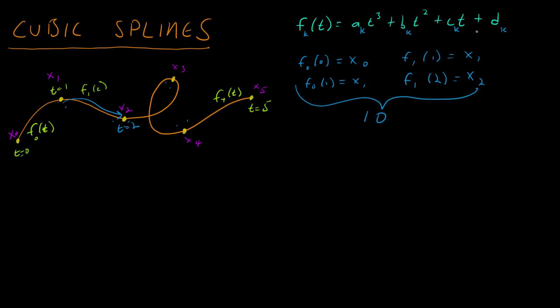But how many coefficients do we have? We have five formulae, and each one has four coefficients — that's 20 coefficients. We need exactly as many constraints as coefficients, so we need more constraints. We're going to make a large matrix with 20 rows and 20 columns, and we need enough data to fill it in and solve the system of equations. So we only have 10 constraints and we need 20.